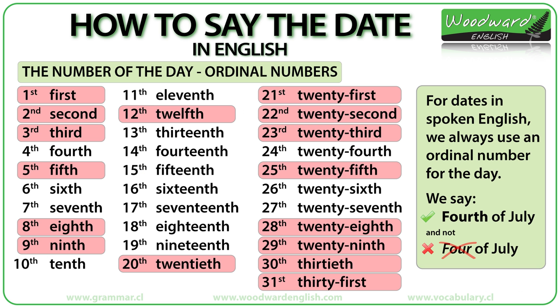4th is an ordinal number. Ordinal numbers show order or sequence. Normally there is a TH at the end of the number. For example, 7 becomes 7th, 13 becomes 13th.